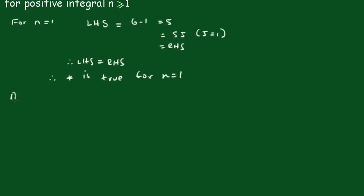Now we'll assume the statement is true for n equals k. That is, 6 to the k minus 1 equals 5 times j dash, indicating a different integer. j dash is an integer. That's my assumption statement.